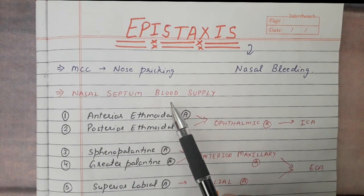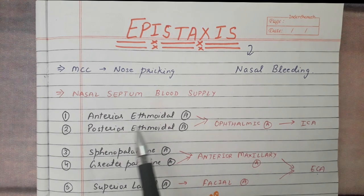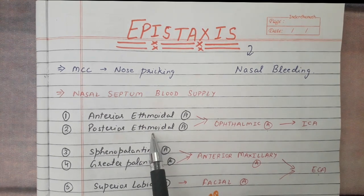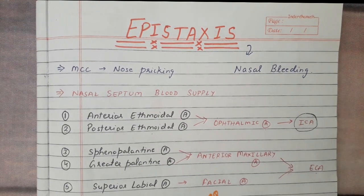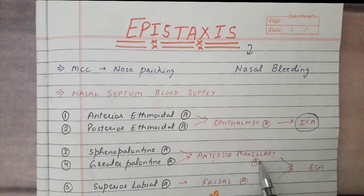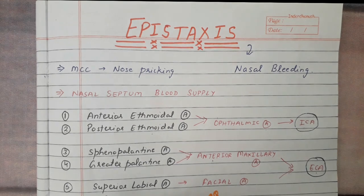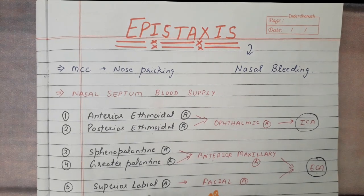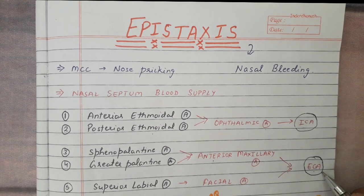First we will study about the blood supply of the nasal septum. It is supplied by 5 arteries: the anterior ethmoidal artery and posterior ethmoidal artery — these are branches of the ophthalmic artery, which is a branch of the internal carotid artery. The sphenopalatine artery and greater palatine artery are branches of the maxillary artery, a branch of the external carotid artery. The fifth is the superior labial artery, a branch of the facial artery, which is also a branch of the external carotid artery.